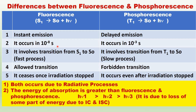Fluorescence involves the transition from the S1 state to S0, which is a fast process and this transition is allowed. Phosphorescence involves the transition from the triplet state to the ground singlet state. This is a slow process, and this transition is forbidden, whereas the S1 to S0 transition in fluorescence is allowed.